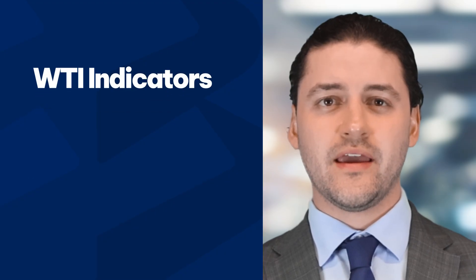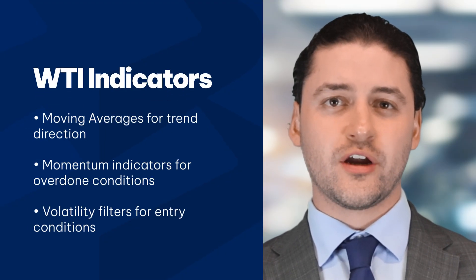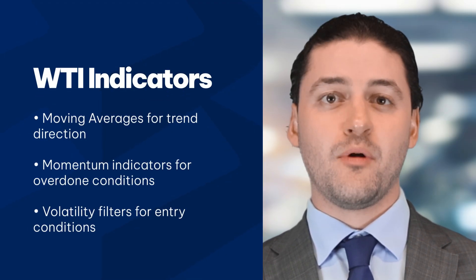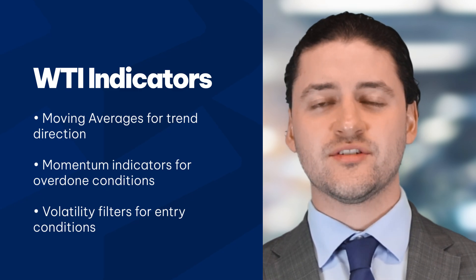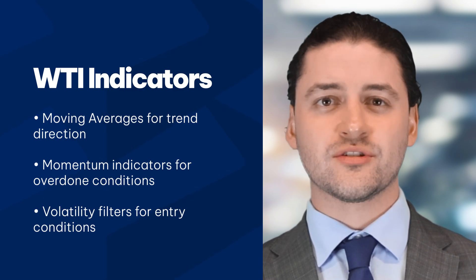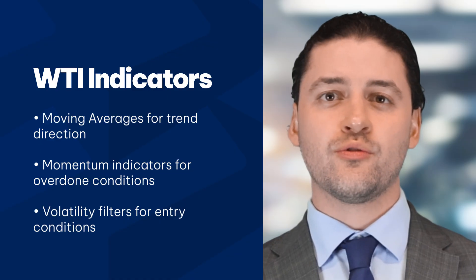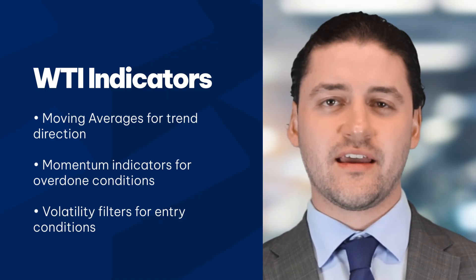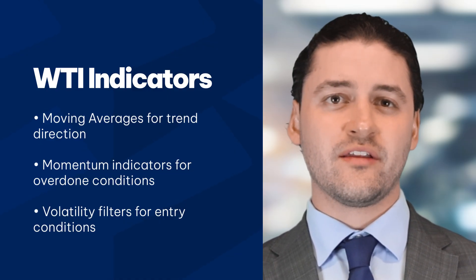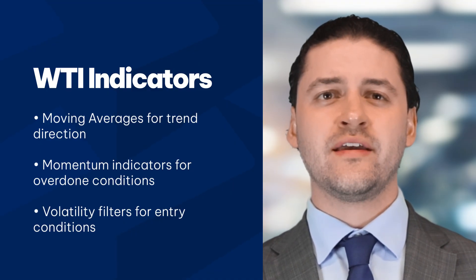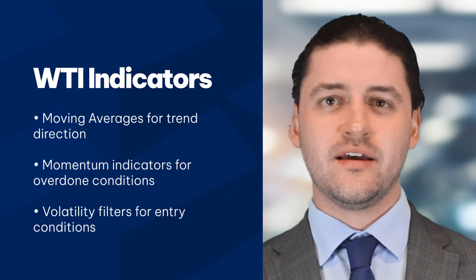For crude oil trading, a few tools tend to be more popular among traders. Moving averages like the SMA or EMA are commonly used to track trend direction and spot crossovers for entry signals. Momentum indicators such as the Relative Strength Index can help identify overbought or oversold conditions, which can be useful during volatile moves. And if you're trading around major releases like inventory data, consider adding volatility filters such as Bollinger Bands. The strategy you define can include any combination of these, depending on how you want the bot to behave.